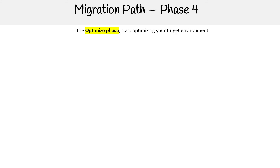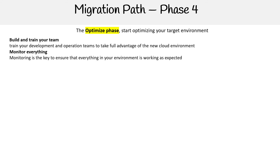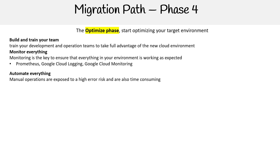Phase four is the Optimize phase — start optimizing your target environment. Build and train your team: train your development and operations team to take full advantage of new cloud environments. Monitor everything: monitoring is the key to ensure that everything in your environment is working as expected — tools include Prometheus, Google Cloud Logging, and Google Cloud Monitoring.